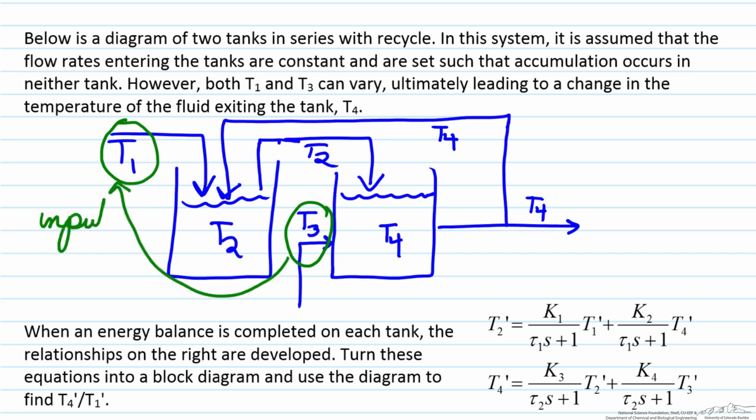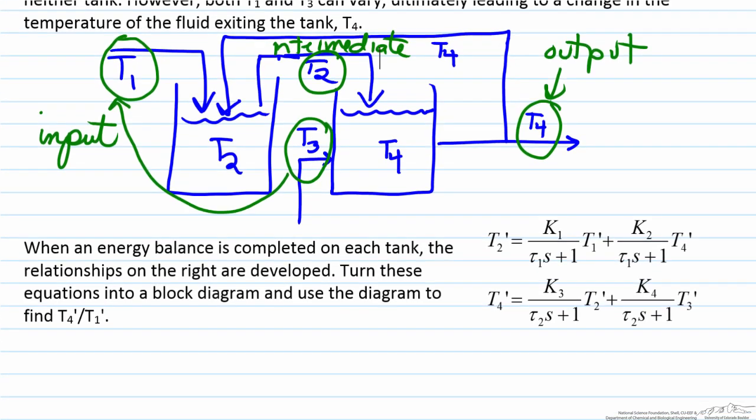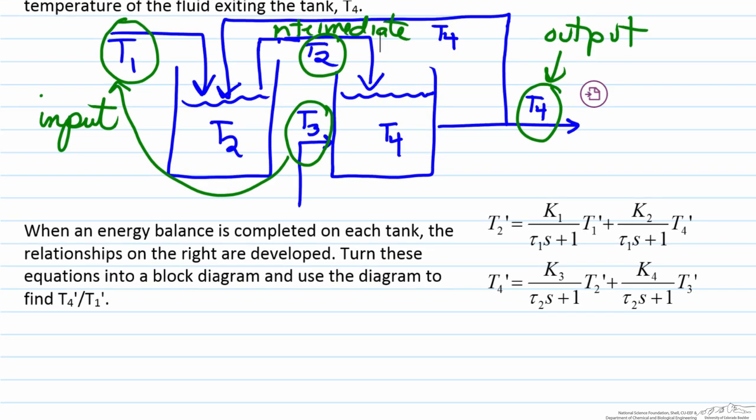So if we look at this, T1 and T3 would both qualify as input variables because they are things that can vary that are not modified by the process. T4 would be our output variable and T2 is something which is directly affected by input variables but is not the desired output, so therefore T2 represents an intermediate variable.